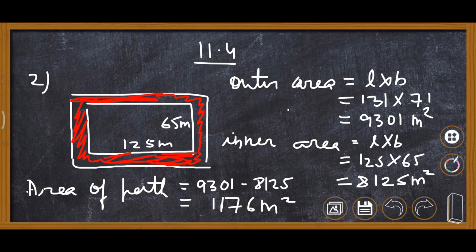Now we find the inner area using length into breadth. Inner length is 125 and breadth is 65, so the inner area is 8125 meter square. Area of path equals 9301 minus 8125, which gives 1176 meter square.